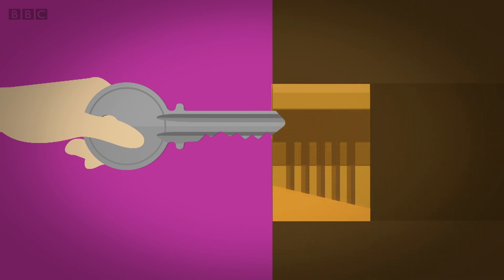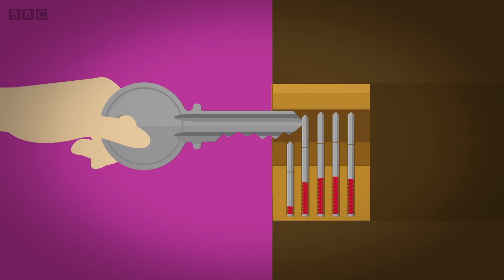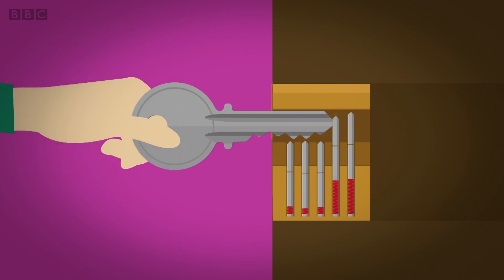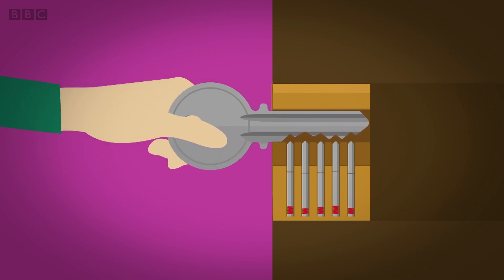Inside the barrel are lots of little metal pins, and each of these pins has a special position. As the key goes in, the teeth on the key push the pins down, and the pins then fit back into the gaps. Only if the pins are in their special position will you hear a click.